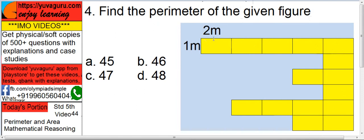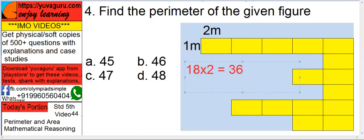How many sides of 2 meters are there? So 1, 2, 3, 4, 5, 6 below, 7, 8, 9, 10, 11, 12, 13, 14, 15, 16, 17, 18. So 18 sides of 2 meter, 18 sides of 2 meter, it becomes 36 meter. Now 1 meter.